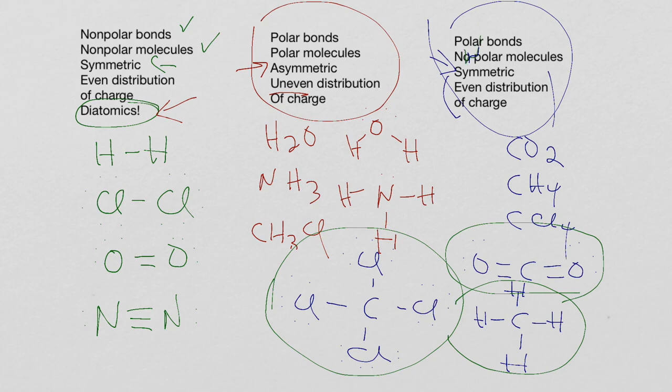So, you need to recognize the formulas, you need to recognize the names for these three categories, and you're supposed to be able to draw the Lewis structures. These are the ones that show up most often. Take a look at what else your teacher told you to remember.